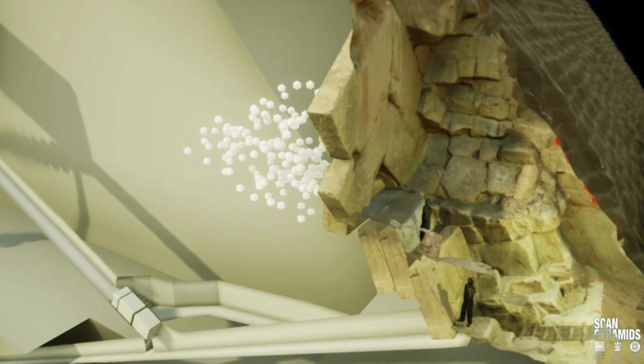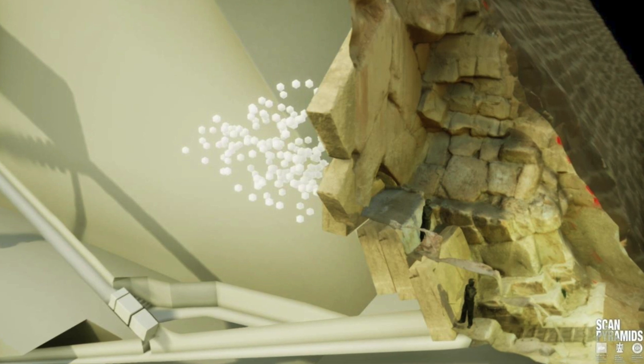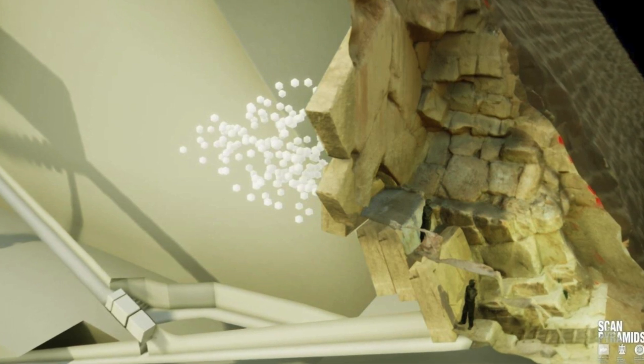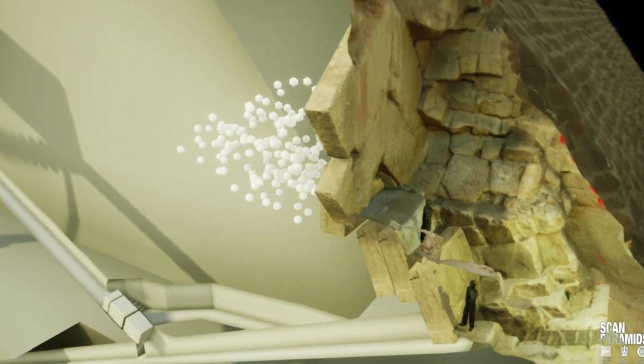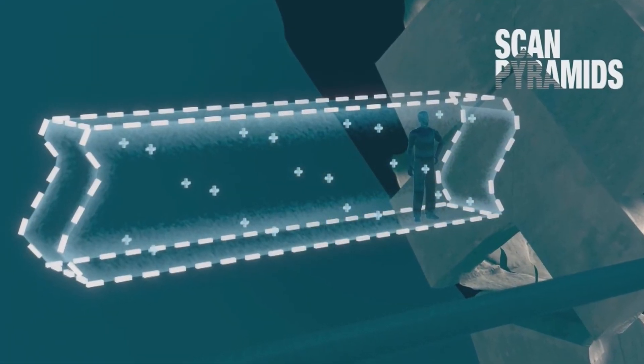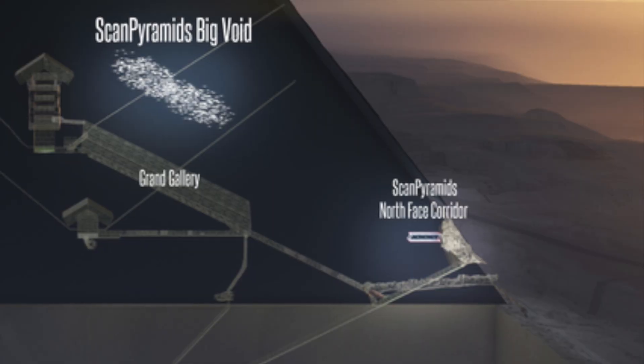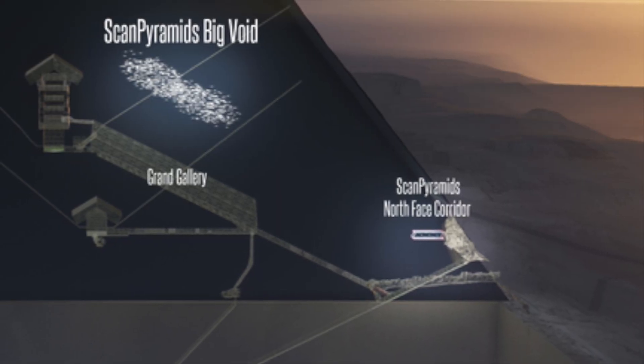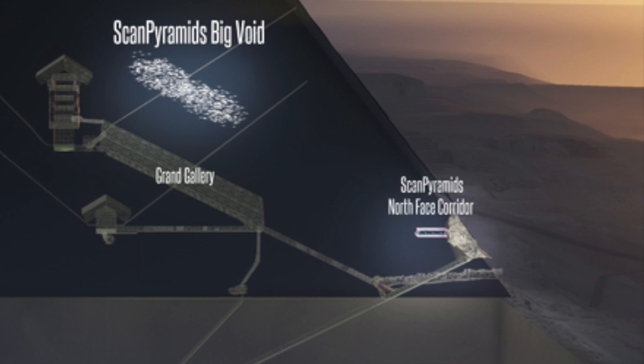As reported on dailygrail.com, the six minute video from the ScanPyramids project also discusses the second smaller cavity behind the entrance of the pyramid, which the team now know is a corridor behind the large chevron blocks. This corridor, like the big void, is very much there and has also been confirmed with the latest tests.